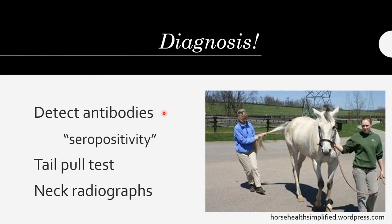Antibodies are the body fighting back against a specific antigen it detects. It'll detect some part of Sarcocystis neurona and produce antibodies. We're able to determine if those are present in the blood or the cerebrospinal fluid — if they are, the horse is called seropositive. That doesn't necessarily mean they're displaying clinical signs; they might have antibodies in their blood and not appear sick. It's quite common for horses to be seropositive and not actually show clinical manifestations of the disease. You'd also want neck radiographs to rule out wobblers, which is caused by compression of the spinal cord within the cervical region.